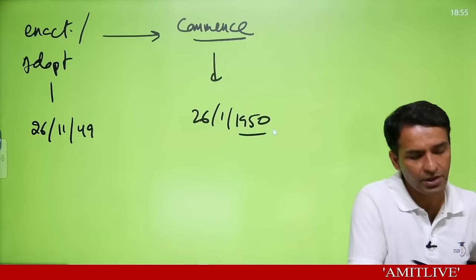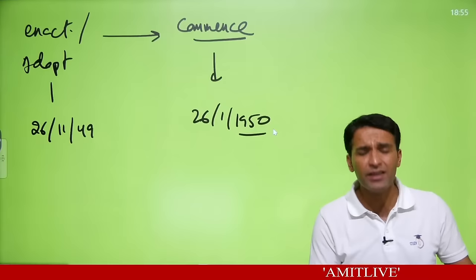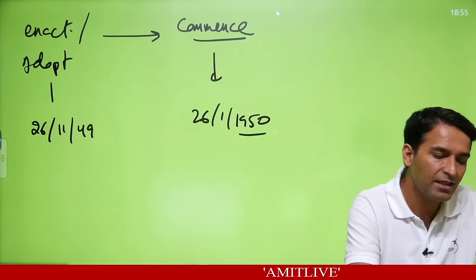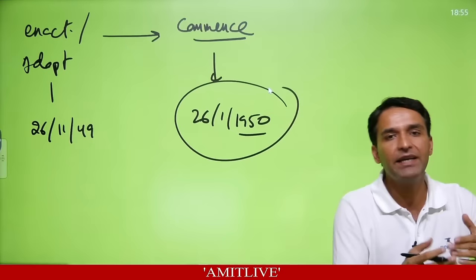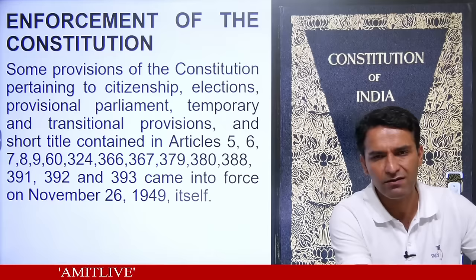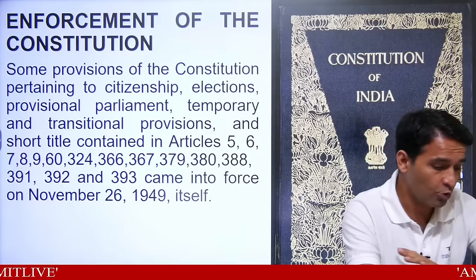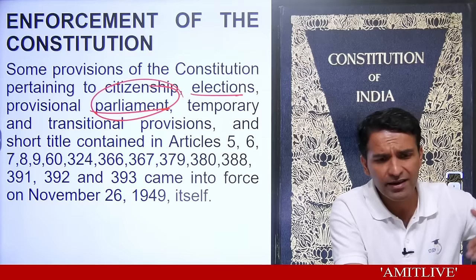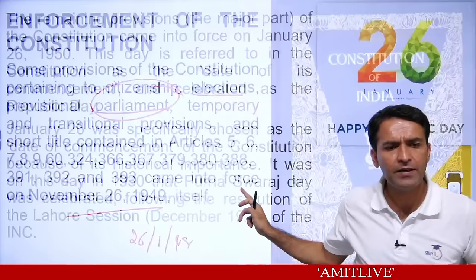From 26th November 1949, some provisions of the constitution — temporary provisions, election-related provisions, provisional parliament provisions — started. The rest of the constitution started from 26th January 1950, called the date of commencement, also celebrated as Republic Day. This date was chosen for its historical importance — in 1930, it started being celebrated as Purna Swaraj Divas following resolutions of the Lahore Session.